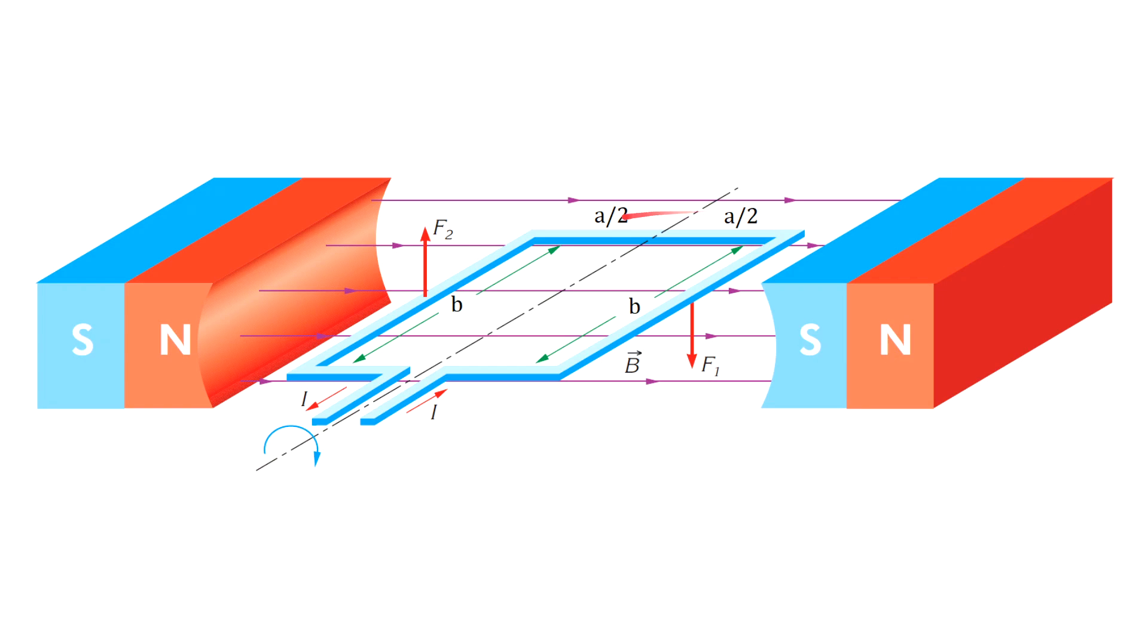When a current flows in the loop, the rectangular loop of width a and length b is located in a uniform field as shown in the picture. The forces on the two horizontal sides are zero since the wires are parallel to the field.